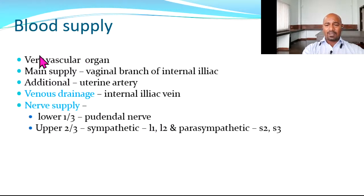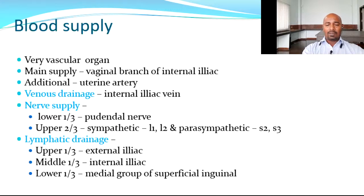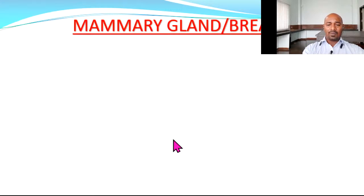The vagina is a very vascular organ; main supply is from the uterine artery or vaginal artery. Lymphatic drainage is important — the upper one-third drains into the external iliac group of lymph nodes, the middle one-third into the internal iliac group, and the lower one-third to the medial group of superficial inguinal lymph nodes.